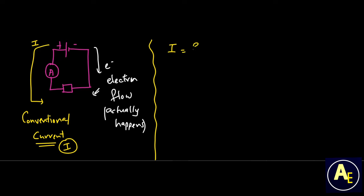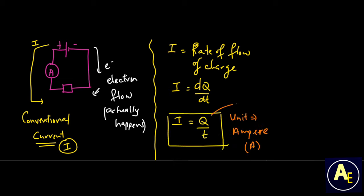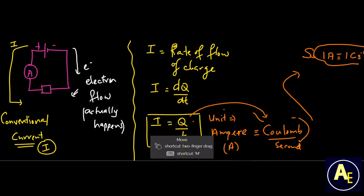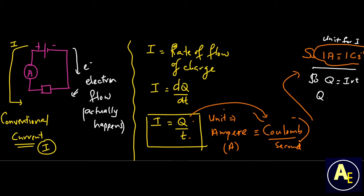However, we look at conventional current — capital I — current being defined as the rate of flow of charge, which gives us the equation I = Q/t. If we make Q the subject of the formula, we obtain Q = It. Keep in mind that current is measured in amperes, charge in coulombs, and time in the SI unit seconds. By definition, an ampere is defined as one coulomb that travels per second.